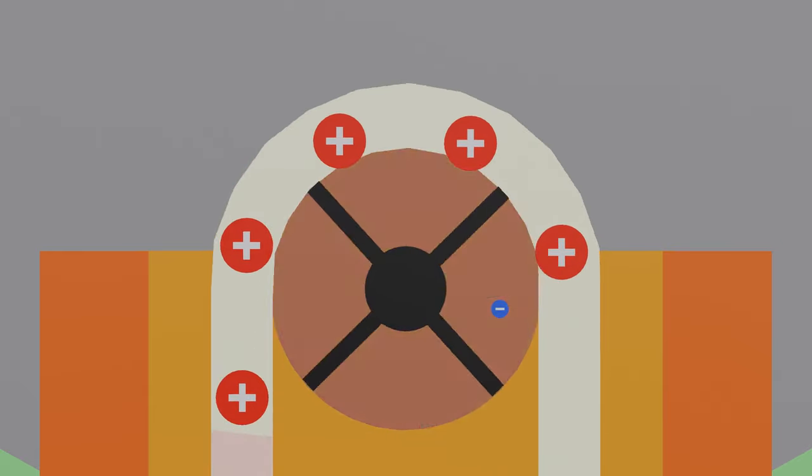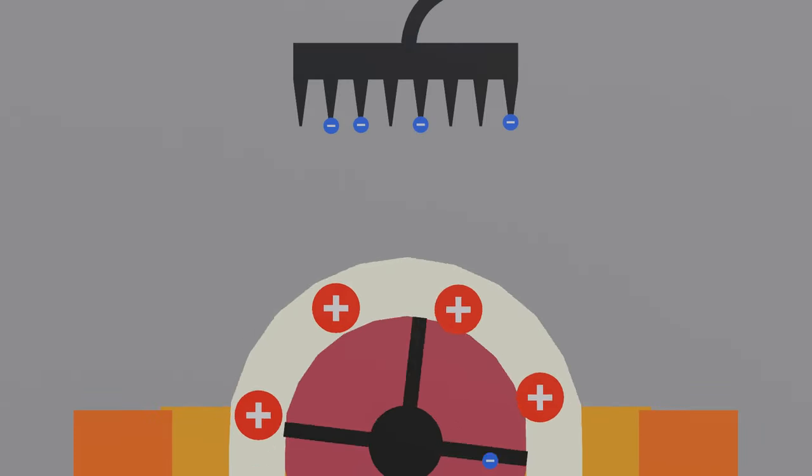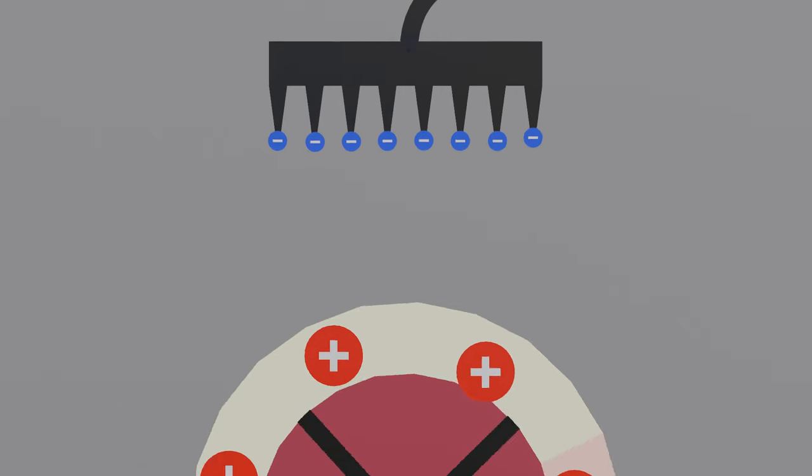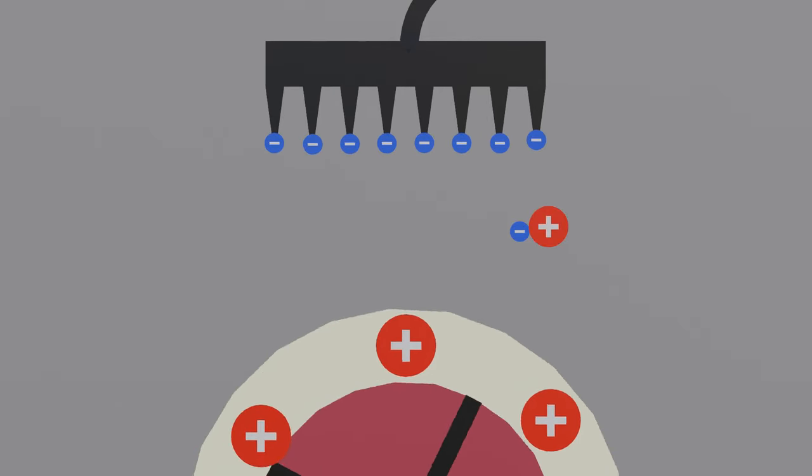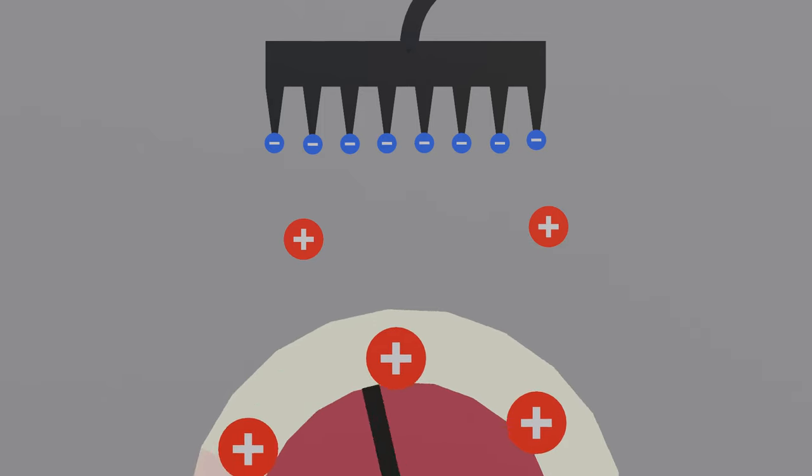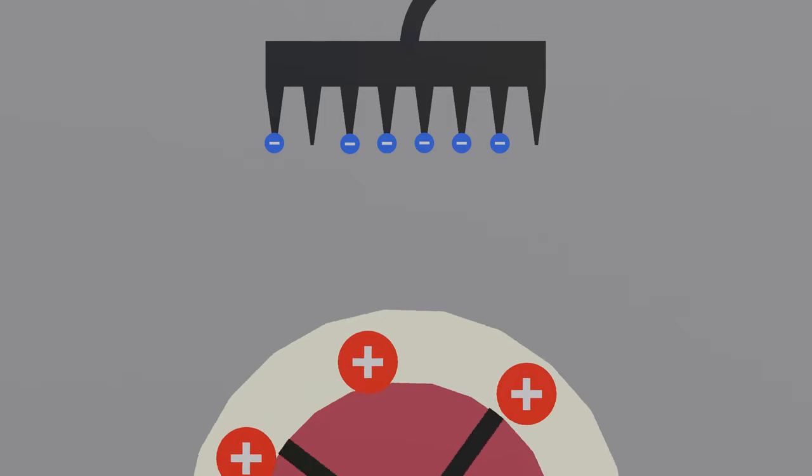The top roller is left with a net positive charge which attracts electrons in the other metal brush, inducing a negative charge in the tips. Once again, air molecules are ionized, but this time the free electrons move towards the positively charged roller, while the positive ions left behind flow towards the metal brush where they gain electrons.